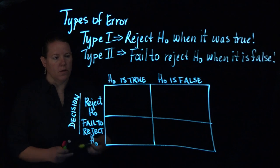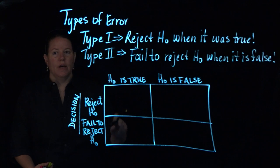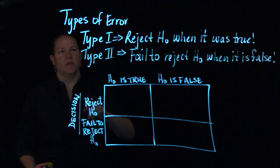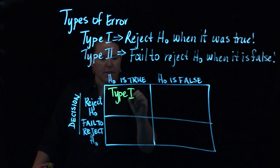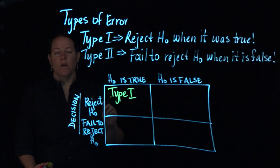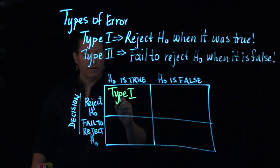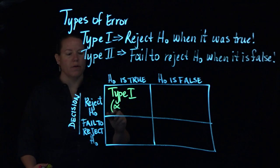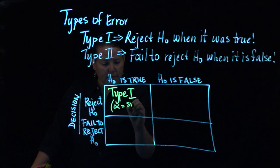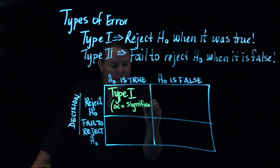So let's talk about what happens here. If you reject the null and the null is actually true, that's what we just said Type 1 error is. So this is Type 1 error. What this is given by is it's given by alpha, right? The probability of getting Type 1 error is given by alpha. And that's the significance level.